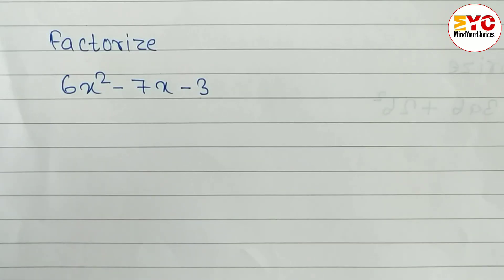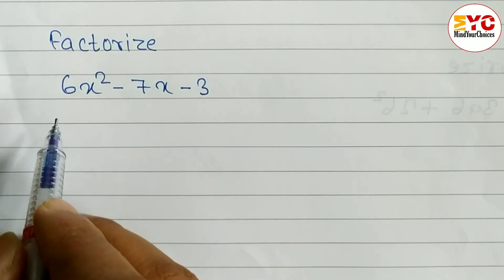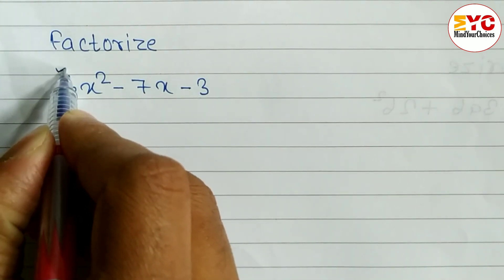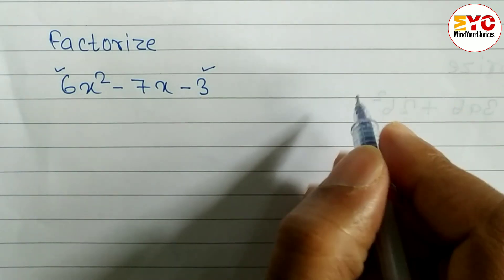In this video we will learn how to factorize easily. You can see here we have a question: 6x² - 7x - 3. First of all, we have to multiply first and last one: 6 into 3.